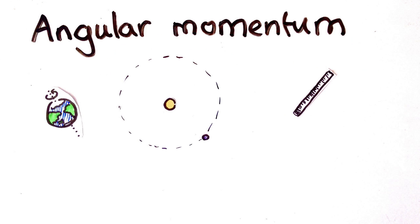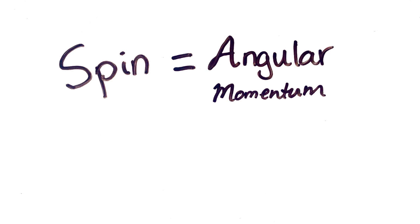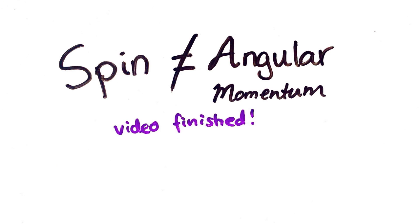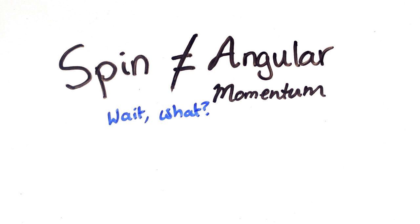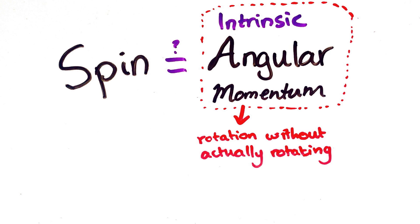Angular momentum measures how much something is rotating. For a very brief time, a few physicists thought that spin was a type of angular momentum that came from electrons spinning on their own axes. These days we're pretty sure that isn't the case — electrons aren't actually spinning. But spin is still thought of as a type of angular momentum, referred to as intrinsic angular momentum: angular momentum a particle just has without physically rotating. The idea always struck me as odd, and the two arguments I've heard for it seemed weak.